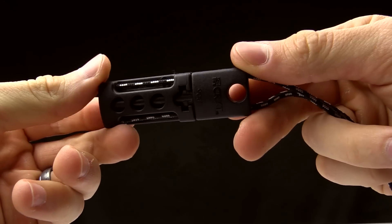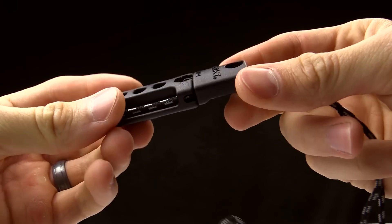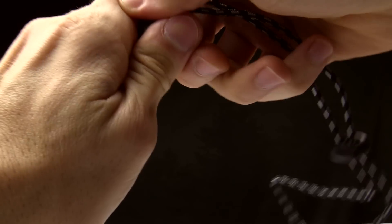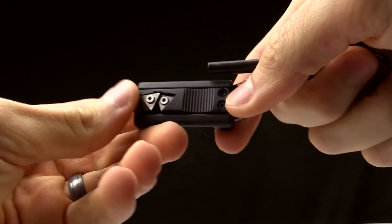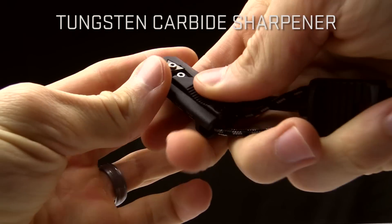Today at CRKT we are taking a look at the Spark and Sharp. This is a Tom Stokes design. What it is is you've got a magnesium fire starter right there and then you've got a knife sharpener right here.